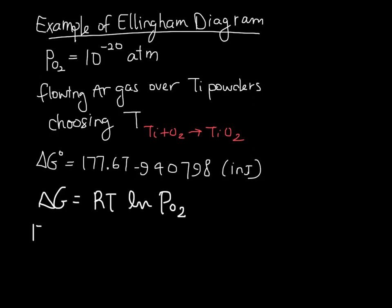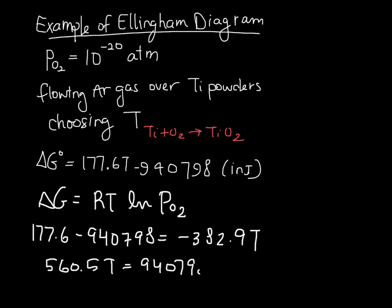We can set this up by putting delta G and then plugging in the gas constant and ln of 10 to the negative 20, which gives us this. Collect all of our T terms on one side and finally solve for a temperature of 1678 K. This is how we can do it if we have this expression for delta G as a function of T for the reaction.